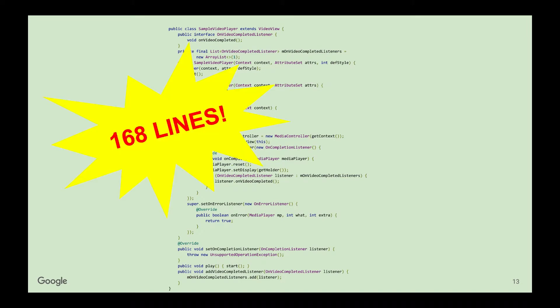This code is for the sample video player from our basic example before we rewrote it to use the SDK-owned player. This code, combined with the video player with ad playback code on the screen now, created the video player used by the sample. When we rewrote the sample to use SDK-owned ad playback, these two slides of code were replaced by the code you see on the screen now. With the SDK-owned player rewrite, we were able to remove 168 lines of code from the basic example.